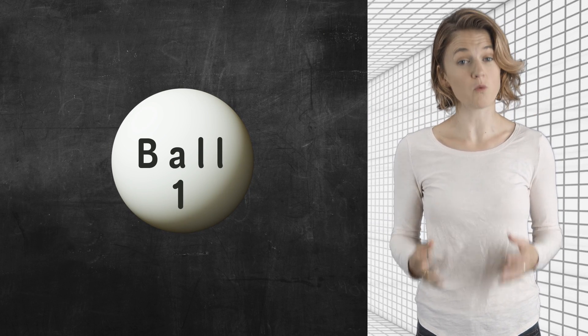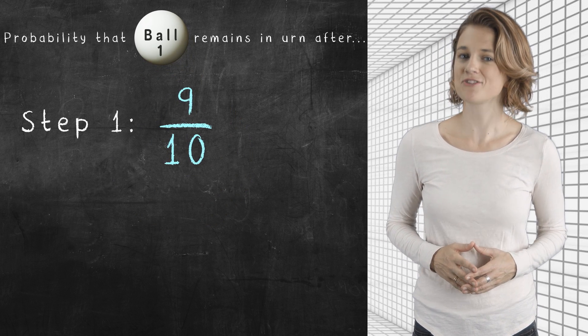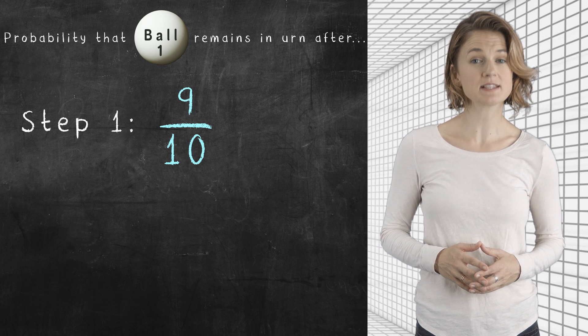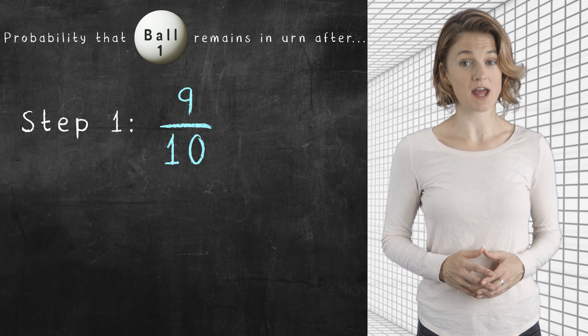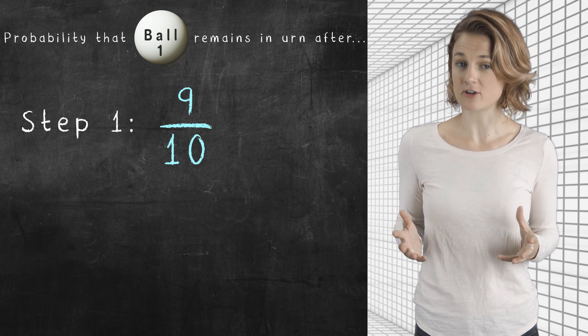Let's focus on ball number one and compute the odds that ball one is still in the urn at noon. There's a 9/10ths chance that ball one is not selected in step one. That is, there's a 9/10ths probability ball one is still in the urn after step one.